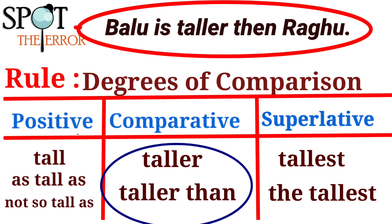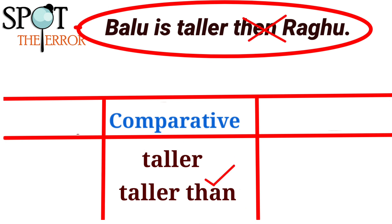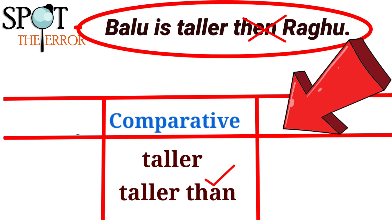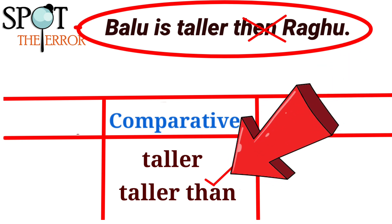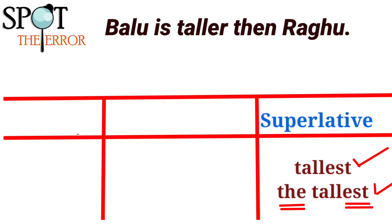If we compare two or more things, then we use 'taller than.' The error here is the use of 'then' instead of 'than.' You have to use 'than' — T-H-A-N — not 'then' — T-H-E-N. Likewise, in the superlative degree, you write 'the tallest' — normally 'the tallest.'